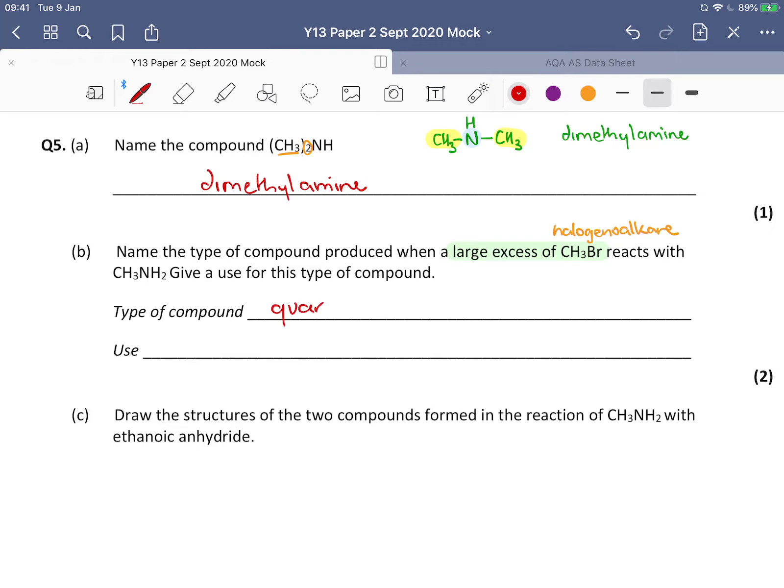It is a quaternary - we'll draw it in a minute to explain it - and then ammonium. It's not an amine, and then salt. Okay, so what we would have made in this particular reaction...